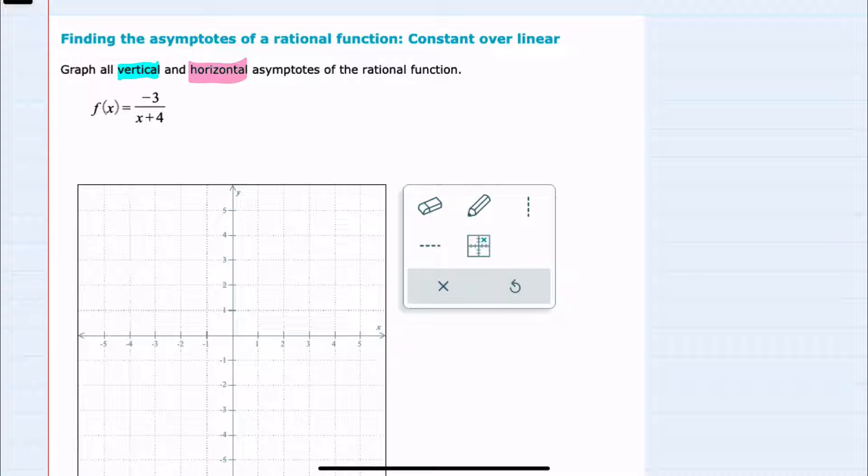Since our function here, f of x, can't be simplified any further—there are no terms in the numerator and denominator that will cancel—